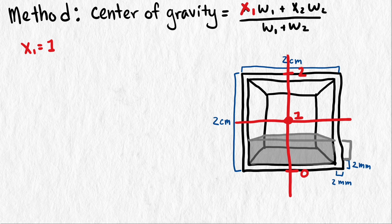Let's call the height of the filling x. Then the coordinate of the centroid will be the shell thickness, 0.2 centimeters, plus half of the height of the filling. So 0.2 plus x divided by 2.